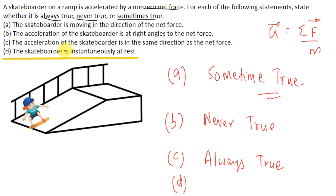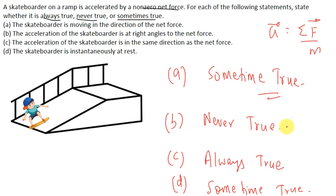Finally, part D says the skateboarder is instantaneously at rest. This can be sometimes true. This case will be true when the net force opposes the motion such that it reduces the instantaneous velocity to zero. Suppose the motion of the skateboarder is in the upward direction and the net force is in the downward direction — then a point will come when the instantaneous velocity goes to zero and the particle is at rest. So this is sometimes true, sometimes false.